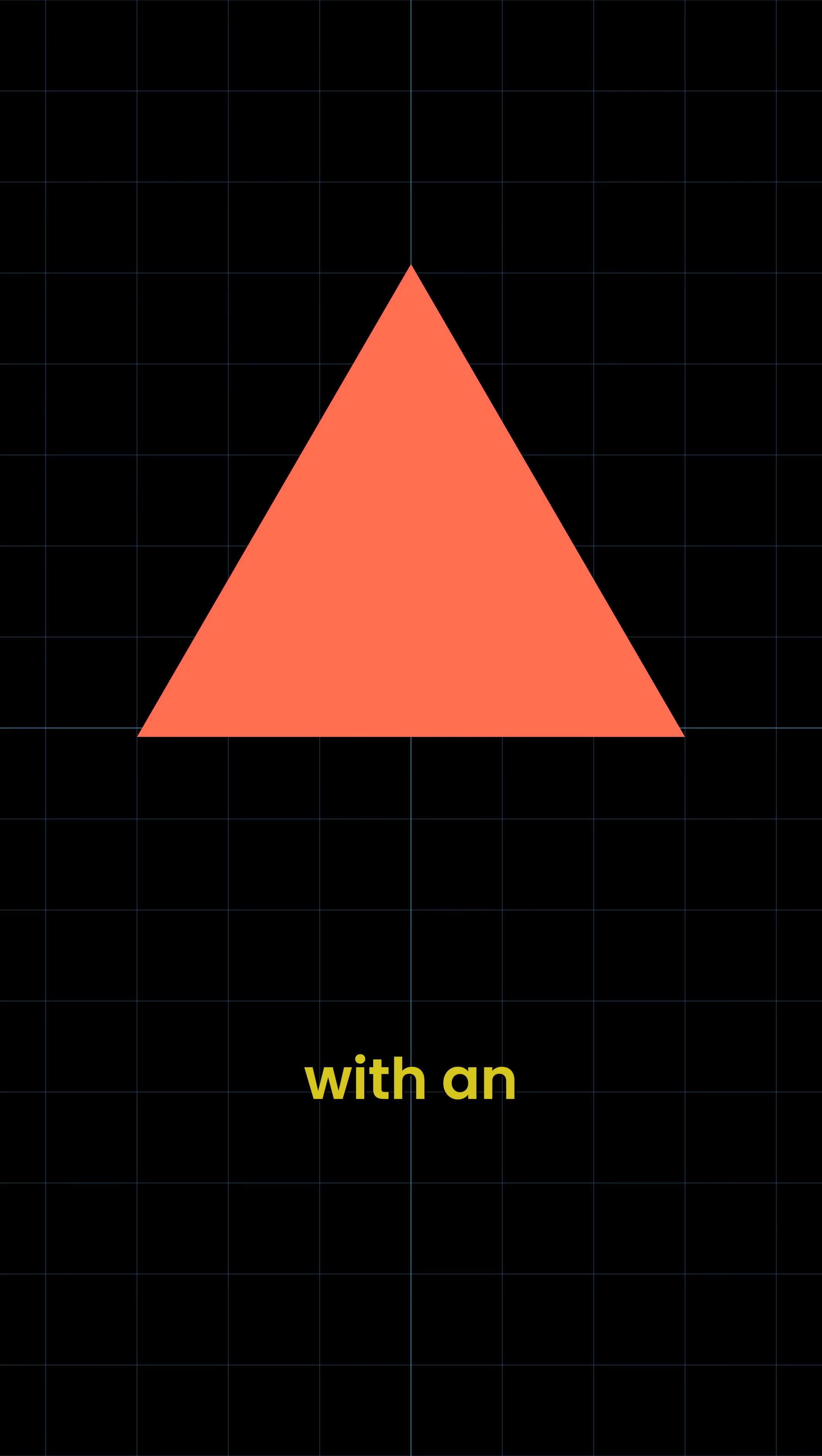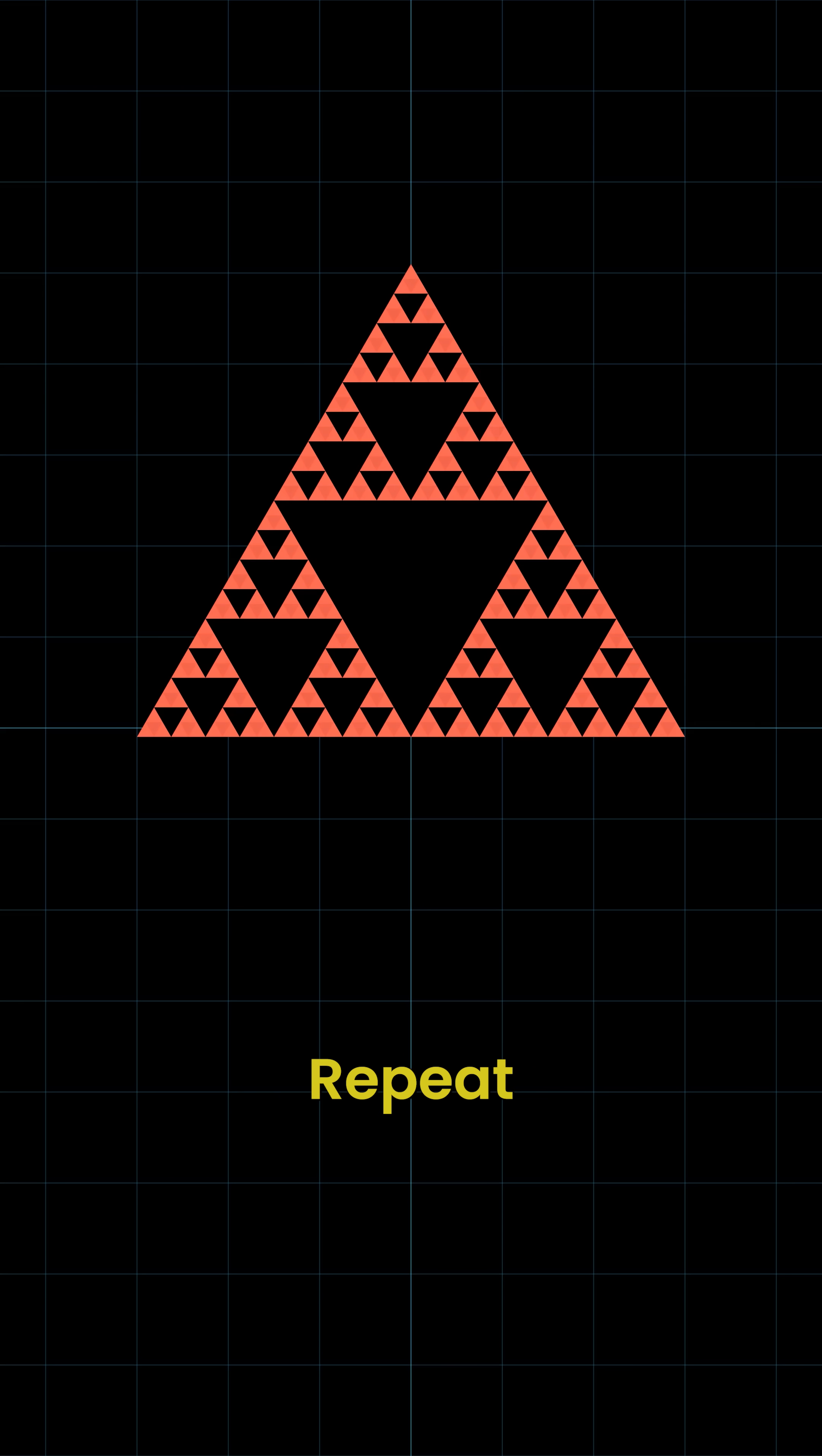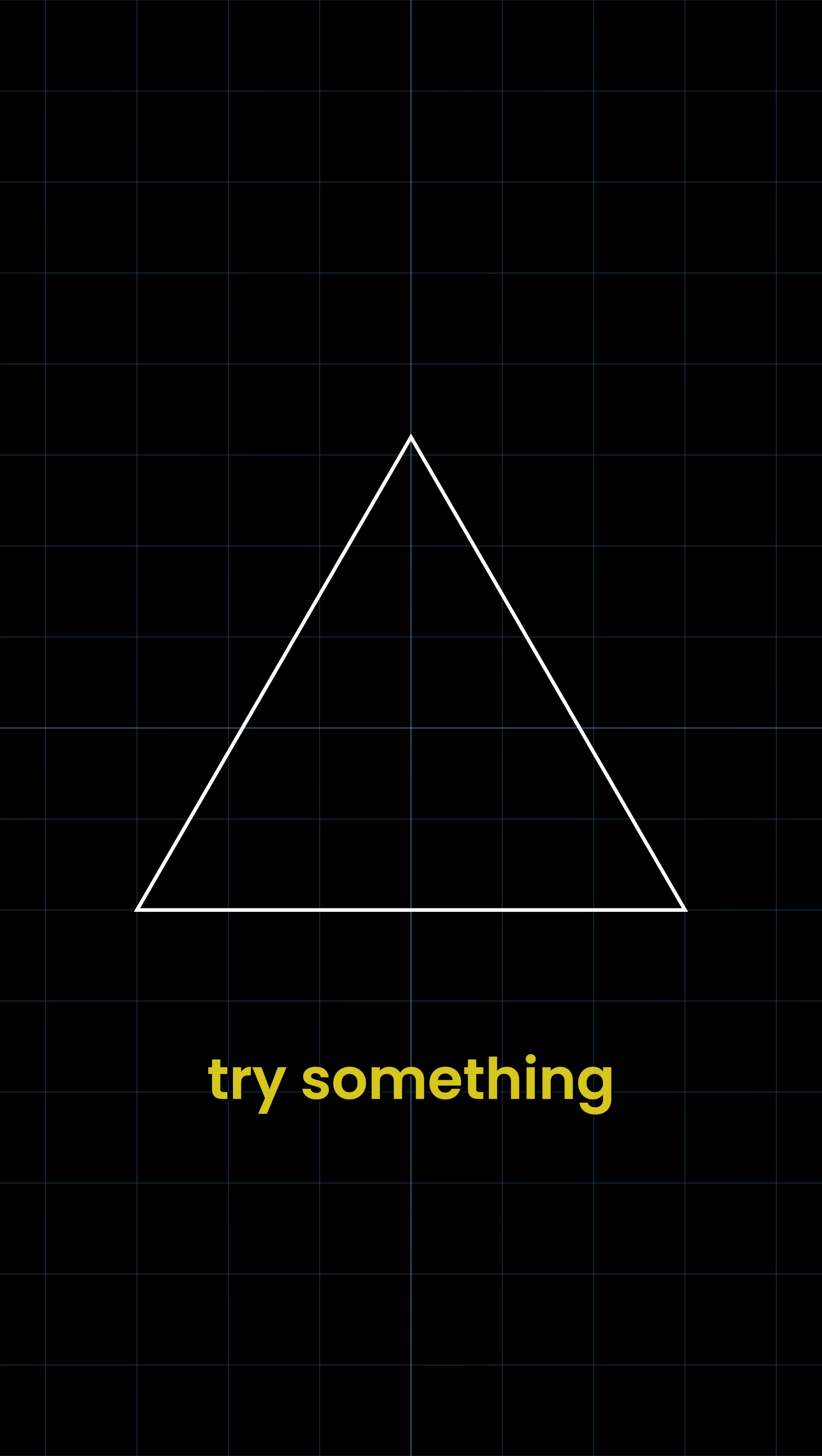There are many ways to create it. Here's one, the methodical way. Start with an equilateral triangle. Remove a smaller upside-down triangle from the center. Repeat this process again and again with each step. The pattern unfolds. Now let's try something different.